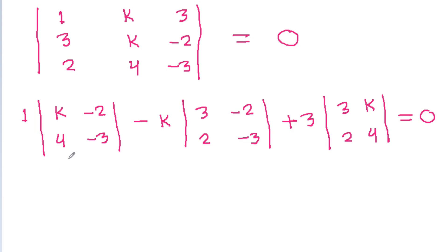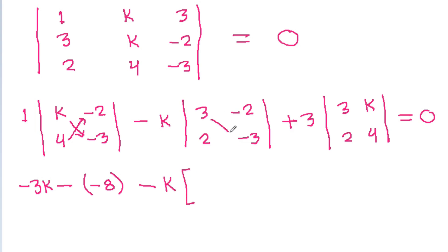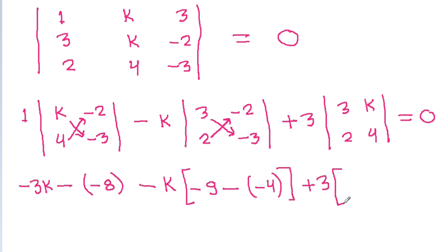And this will be equal to: k times minus 3 is minus 3k, minus 4 times minus 2 is minus 8; minus k times (3 times minus 3 is minus 9, minus 2 times minus 2 is minus 4); plus 3 times (3 times 4 is 12, minus 2 times k is 2k). That is equal to 0.